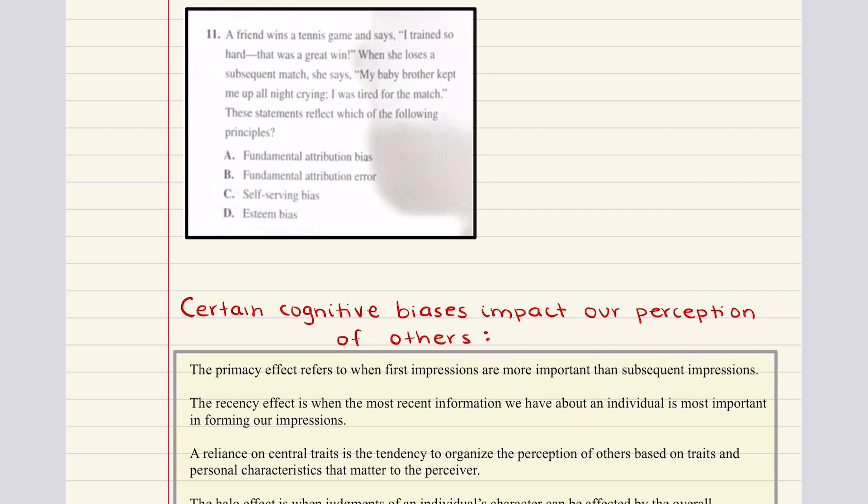Self-serving bias refers to the fact that individuals will view their own successes as being based on internal factors while viewing failures as being based on external factors, which is exactly what's happening here. When they win the match, they're like, I worked so hard for it. That's why I won. But when they lose the match, they try to blame it on some external factor, like her baby brother keeping her up at night. And so these statements reflect self-serving bias. 11 is C.